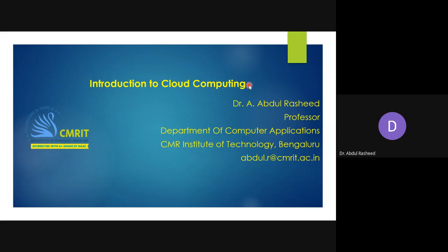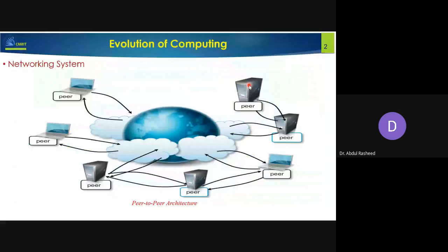We started with the single standalone systems, what we usually call the personal computer. This system was used to store files locally and retrieve them whenever needed. That is the kind of strategy followed for personal computers, and its evolution is called a networking system.